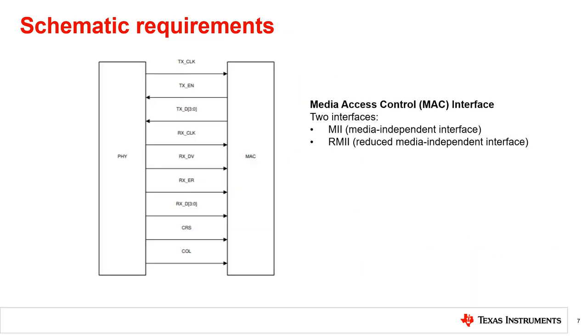When reviewing your MAC interface design, it's important to consider which interface you're using for your application. MII or Media Independent Interface is a synchronous 4-bit wide nibble data interface that connects the PHY to the MAC. RMII or Reduced Media Independent Interface provides a reduced pin count alternative interface. Typically MAC interface, in this case RMII or MII, signals are directly routed between MAC and PHY.